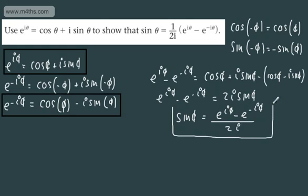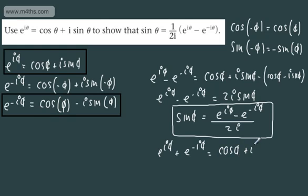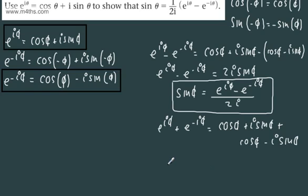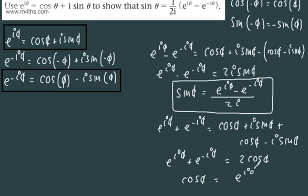You may quite frequently see it left in the form above, but I prefer working with it in this form. Now let's add them: e to the i theta plus e to the minus i theta gives us cos theta plus i sine theta plus cos theta minus i sine theta. The sine terms cancel, so e to the i theta plus e to the minus i theta equals 2 cos theta. Therefore, cos theta equals e to the i theta plus e to the minus i theta, all over 2. And that gives us another very important result.